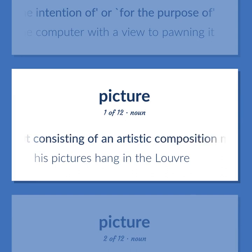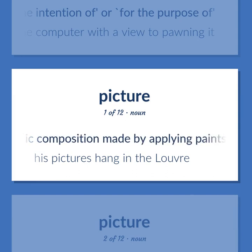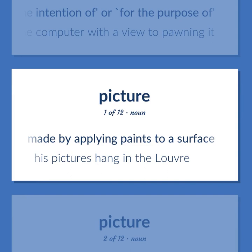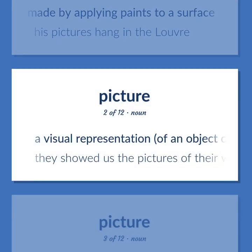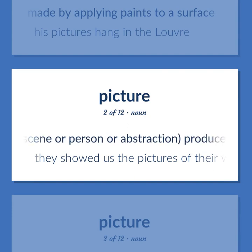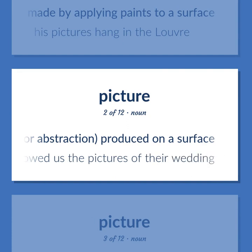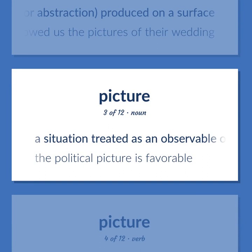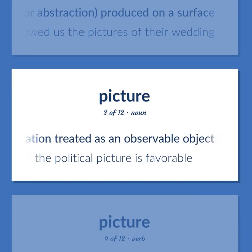Picture: Graphic art consisting of an artistic composition made by applying paints to a surface. His pictures hang in the Louvre. A visual representation of an object or scene or person or abstraction produced on a surface. They showed us the pictures of their wedding. A situation treated as an observable object. The political picture is favorable.